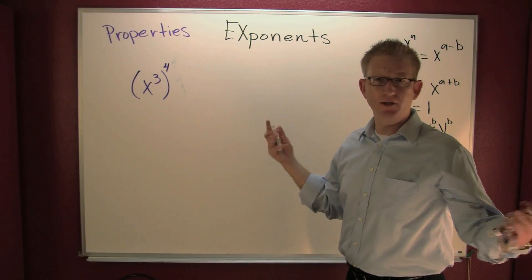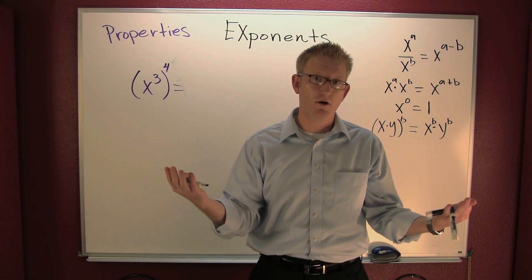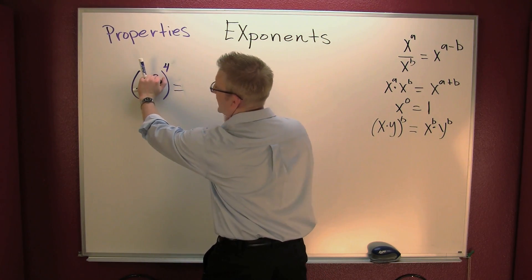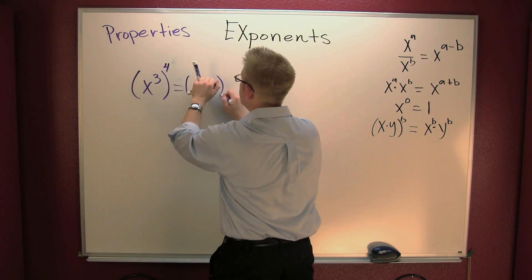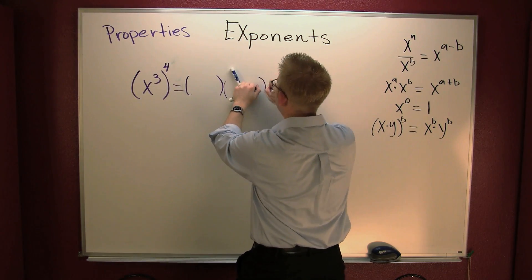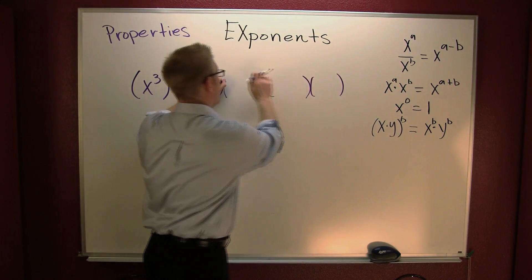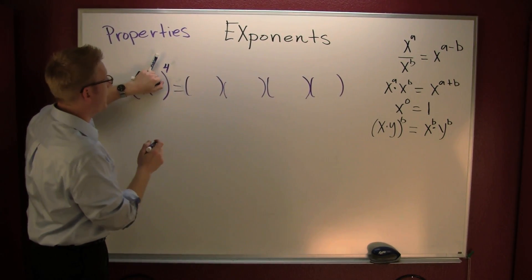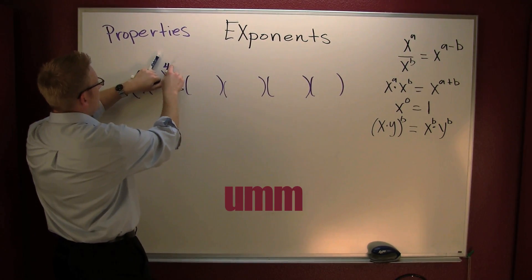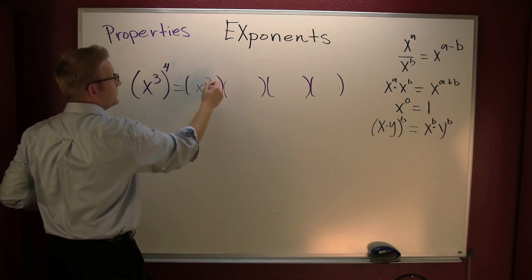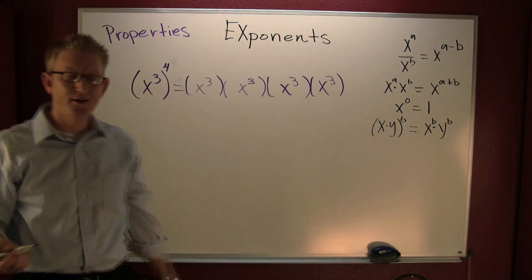Got another one — take a look at this: a power raised to a power, like (x to the third) to the fourth. Think of it like 'hand to the fourth power' — we expand it out as four copies of x to the third: x to the third, times x to the third, times x to the third, times x to the third. Now expand each x to the third as three x's — we get four groups of three x's.